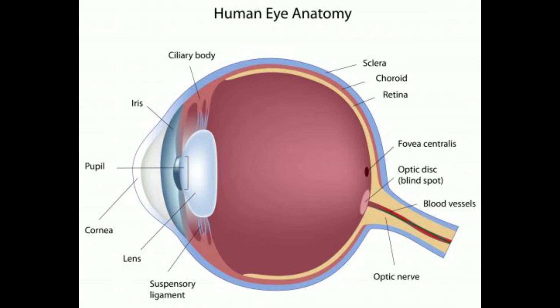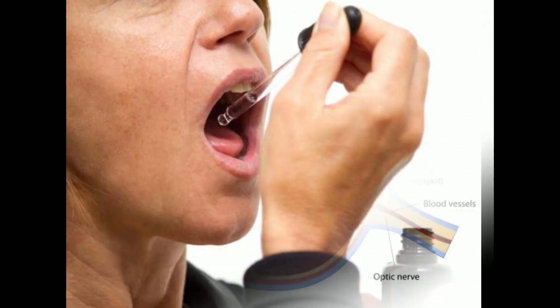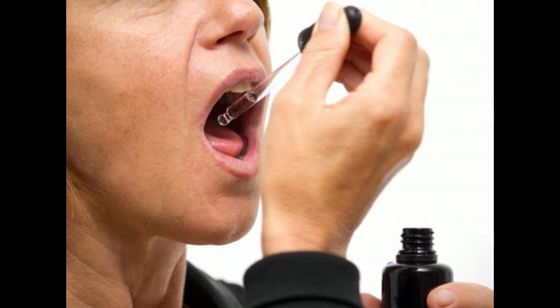Infection: sometimes bacterial or viral infections cause pinpoint pupils. An example is uveitis, which affects the middle part of the eye, including the iris. Depending on the type of infection and how severe it is, a person can develop inflammatory adhesions between the lens and the iris. These essentially cause tissue in the eye to stick together, which makes it difficult for normal expansion or contraction to occur.